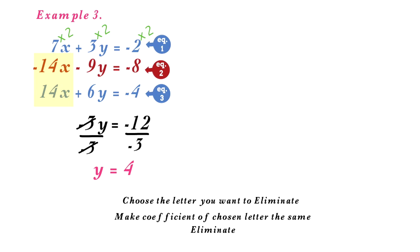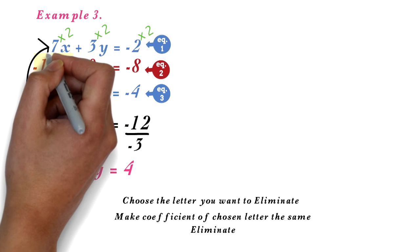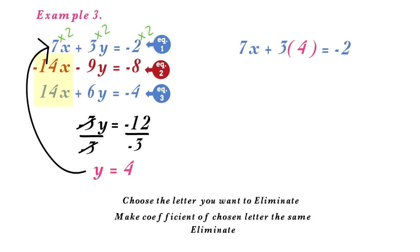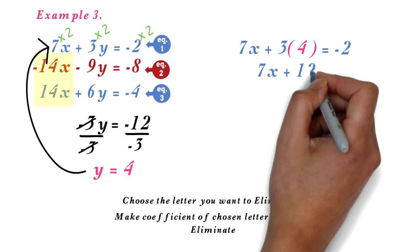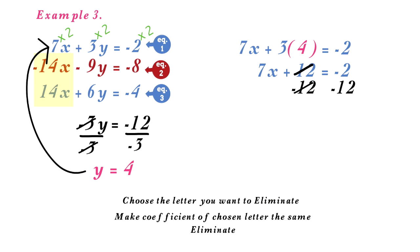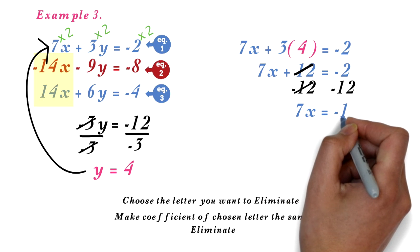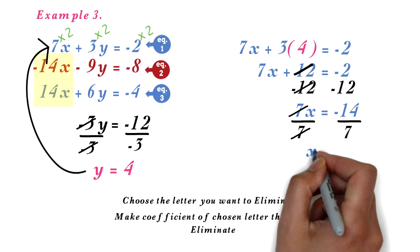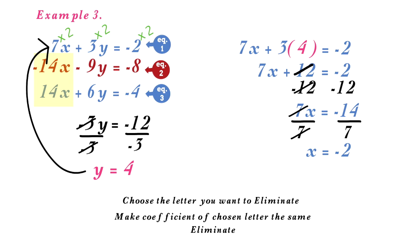To find the x value, substitute y equals 4 into any of the equations. I will choose equation 1: 7x plus 3 times 4 equals negative 2. 3 times 4 is 12. Subtract 12 from both sides — the 12 cancels out. Negative 2 minus 12 equals negative 14. Next, divide both sides by 7 — the 7 cancels out. Negative 14 divided by 7 is negative 2. Therefore x equals negative 2. Our final answer is x equals negative 2 and y equals 4.